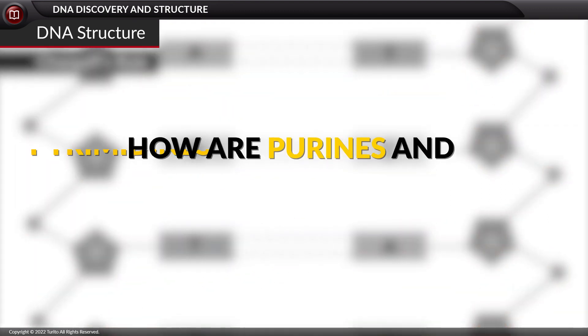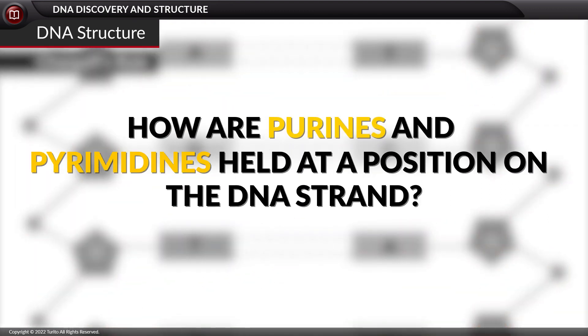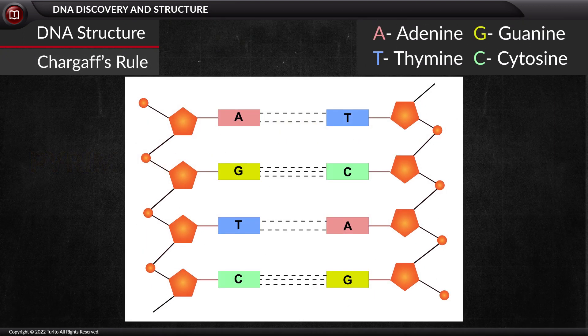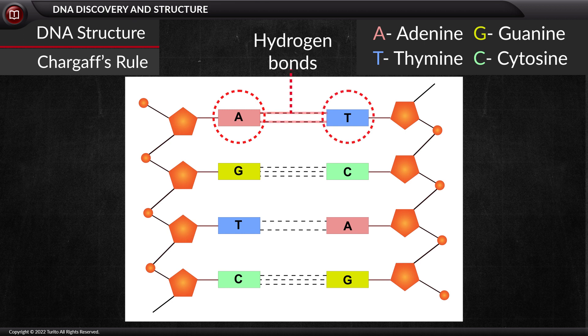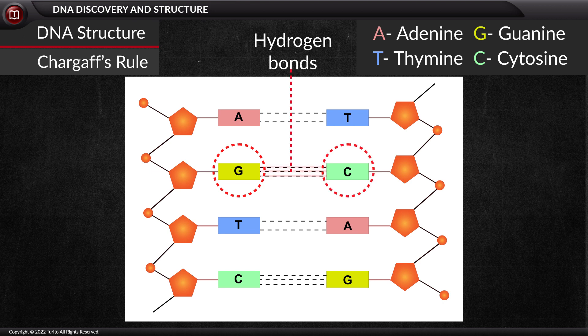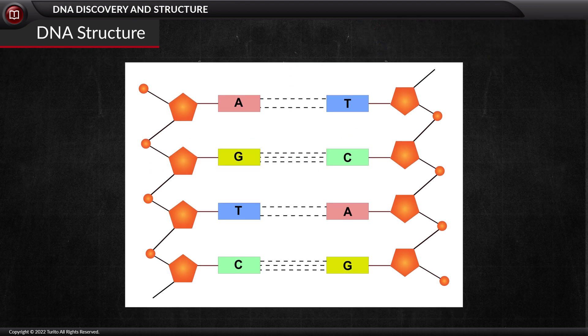How are purines and pyrimidines held at a position on the DNA strand? According to Chargaff's rule, adenine on one strand pairs with thymine on another strand with two hydrogen bonds, whereas guanine on one strand pairs with cytosine on another strand with three hydrogen bonds. How many types of bonds are seen in DNA double helical structure?